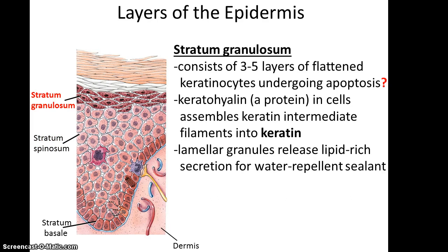The next layer up is the stratum granulosum. Here it usually consists of about 3 to 5 layers of flattened keratinocytes that are undergoing apoptosis, or programmed cell death. As they're undergoing this process, they're also producing keratohyalin, which is a protein in the cells, and this will take the keratin intermediate filaments and reassemble them into the keratin proteins. Also at this time, the lamellar granules release their lipid-rich secretion that provides a water-repellent sealant to the skin.